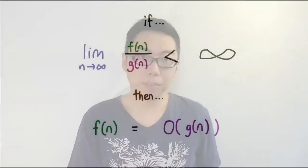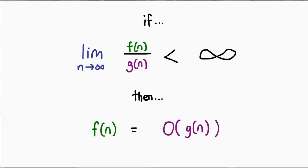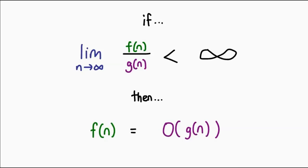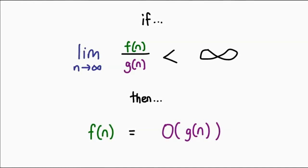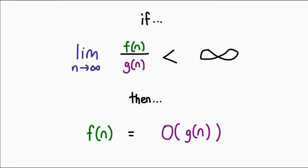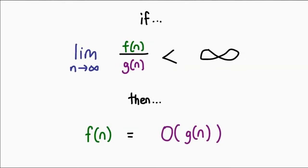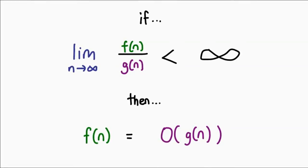And basically it looks something like this. You want to take the limit as n goes to infinity of f(n) divided by g(n). If the result of that computation is less than infinity, then indeed f(n) equals O(g(n)).